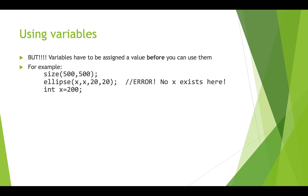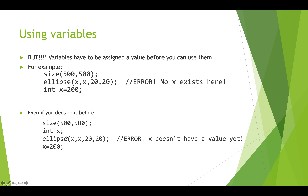One really important thing to know: you have to declare the variable and put a value in it before you can use it. If we set the canvas size and then try to draw an ellipse using 'x' before we've created the variable 'x', Processing will try to find 'x' and won't be able to, because Processing executes lines in order from top to bottom. Even if 'x' is declared on the very next line, it still won't work.